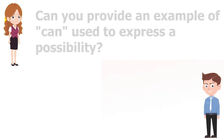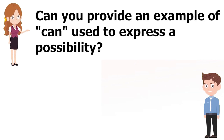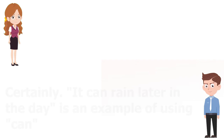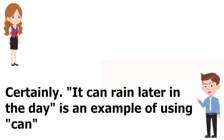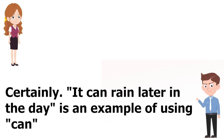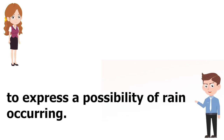Can you provide an example of "can" used to express a possibility? Certainly. "It can rain later in the day" is an example of using "can" to express a possibility of rain occurring.